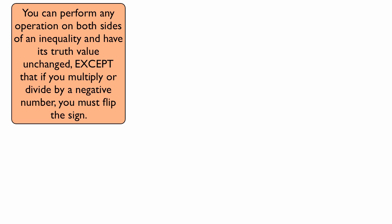So first things first. What I have written there is: you can perform any operation on both sides of an inequality and have its truth value unchanged — meaning that if the inequality is true, it's still going to be true if you add, subtract, multiply, or divide both sides by some number. Except that if you multiply or divide both sides by a negative number, you have to flip the sign of the inequality.